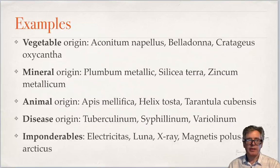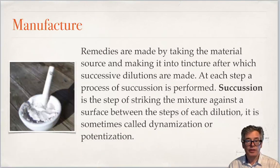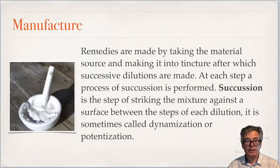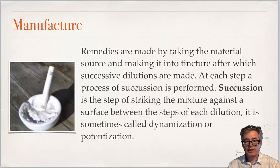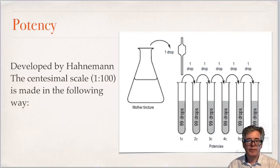So how are they made? They're made by taking the material source, such as lead, and making it into a tincture, after which successive dilutions are made. At each step of the dilution process, a process of succussion is performed. Succussion is the step of striking the mixture against a surface between each dilution step. It is sometimes called dynamization or potentization. Potency refers to the scale of dilution, essentially.